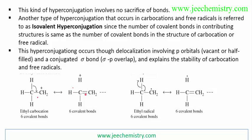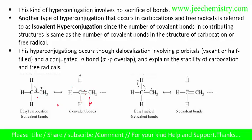In the carbocation hyperconjugation example, the original structure has six covalent bonds. In the contributing structures, counting the bonds: one, two, three, four, five, six — also six covalent bonds. The covalent bonds are the same, so this is isovalent hyperconjugation.